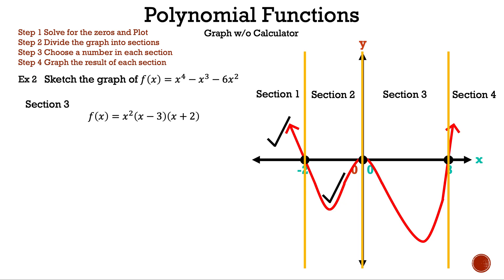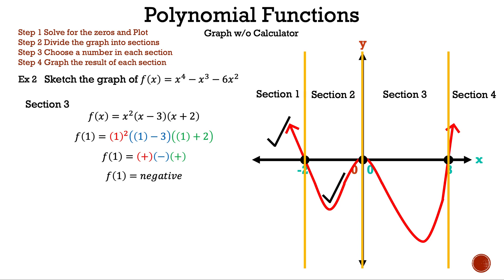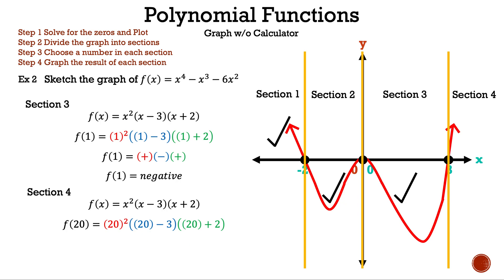For section 3, we picked 1: 1² is positive, (1 - 3) is negative, (1 + 2) is positive — positive times negative times positive gives negative, so section 3 is below the x-axis. For section 4, we chose 20: 20² is positive, (20 - 3) is positive, (20 + 2) is positive — all positive gives positive, so section 4 is above the x-axis. We matched the graph using the charts. That is example 2.